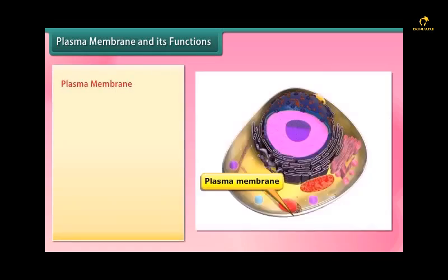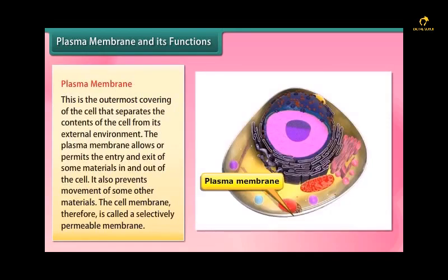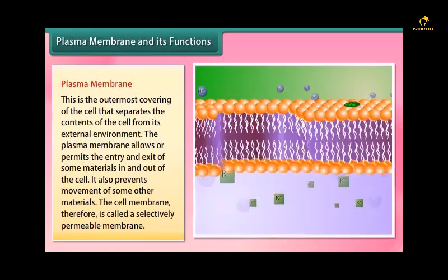Plasma membrane: This is the outermost covering of the cell that separates the contents of the cell from its external environment. The plasma membrane allows or permits the entry or exit of some materials in and out of the cell. It also prevents movement of some other materials. The cell membrane therefore is called a selectively permeable membrane.